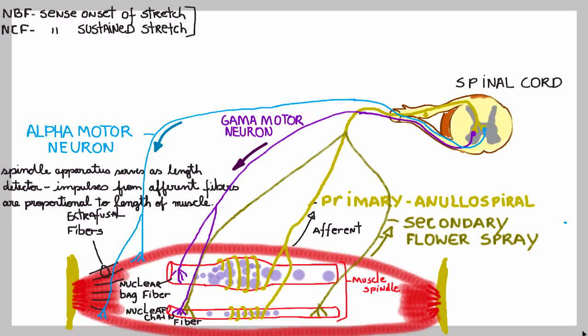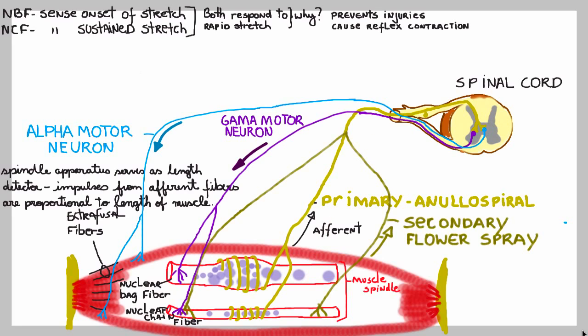Both fiber types respond to rapid stretch. Why would you need them to respond to rapid stretch? To prevent injuries. The sensory neuron synapses with the alpha neuron, so once a stretch is applied to these muscle spindle fibers, the information ascends to the spinal cord and can synapse with both the gamma neuron and the alpha motor neuron, promoting contraction of both the extrafusal and intrafusal fibers. You have a reflex created right here — information goes up, information comes down — and this reflex contraction can prevent injuries.